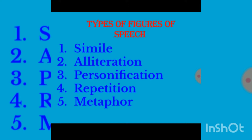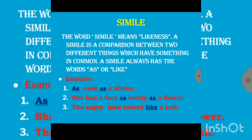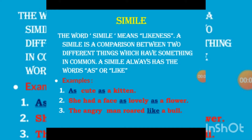In the examination it will be important to identify the figures of speech. So, what is simile? The word simile means 'likeness.' A simile is a comparison between two different things which have something in common. A simile always uses the words 'as' or 'like.' When we compare one thing to another using 'as' or 'like,' that is a simile. When you see those words in a sentence, you can identify it as a simile.